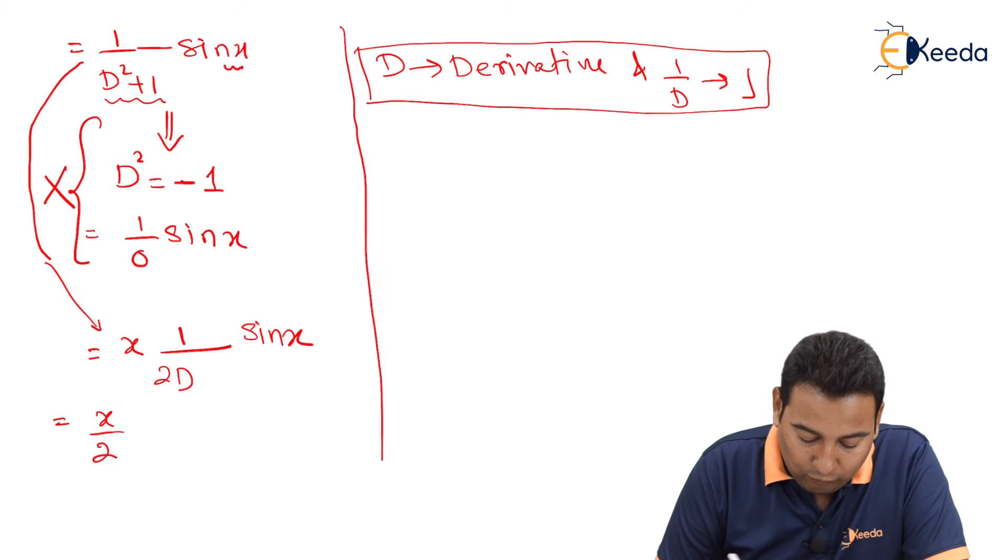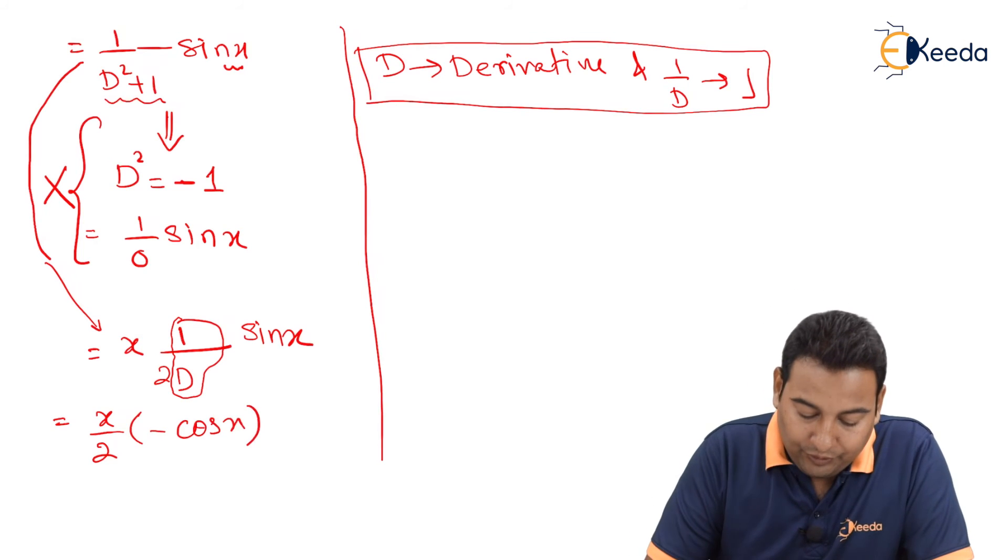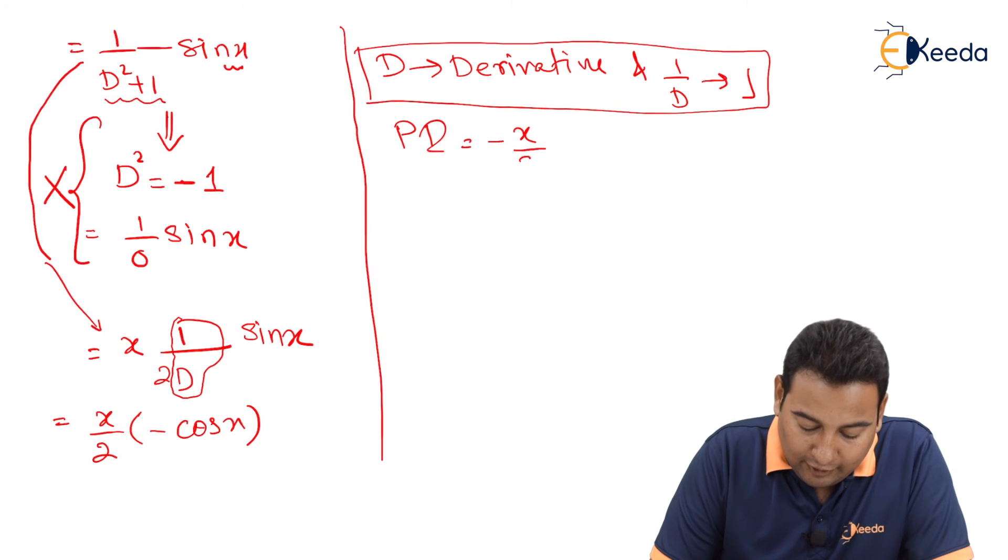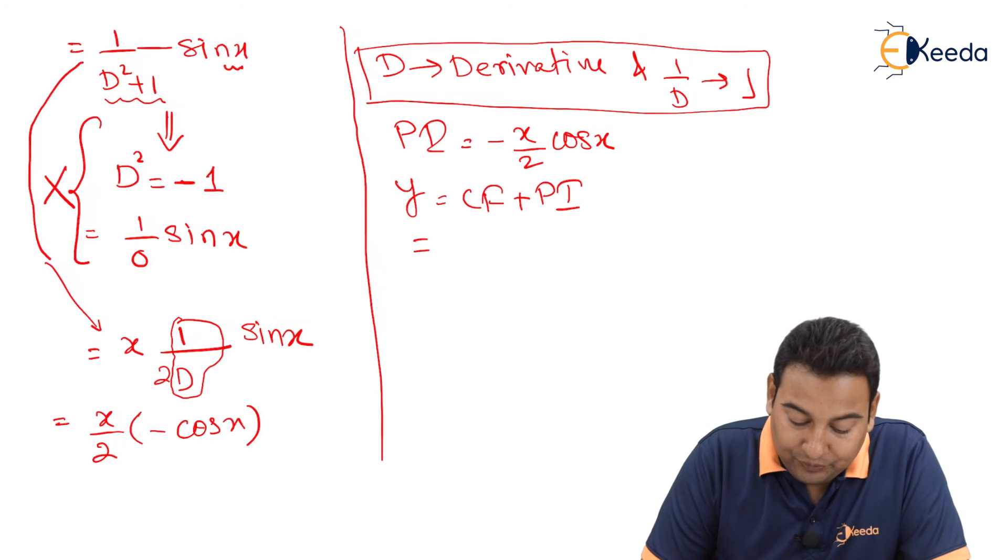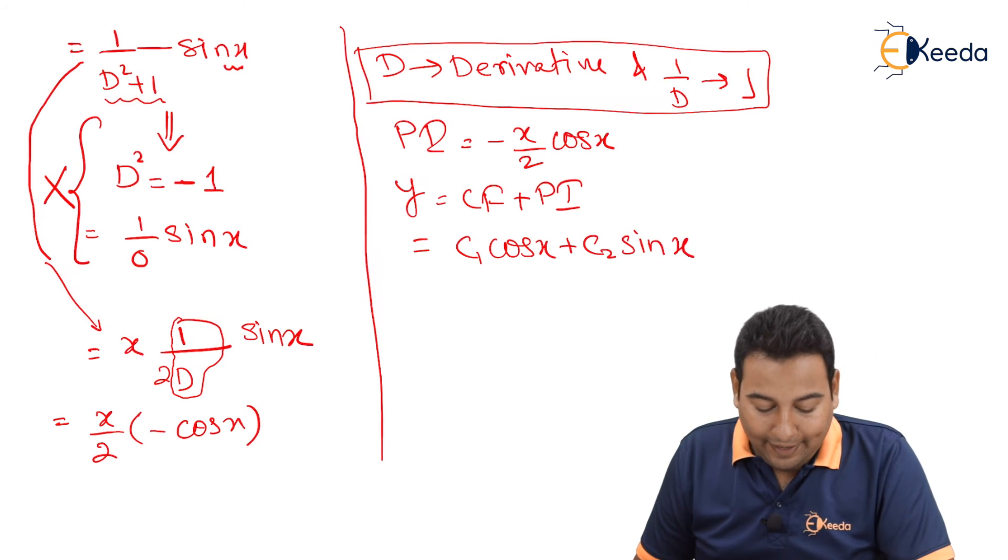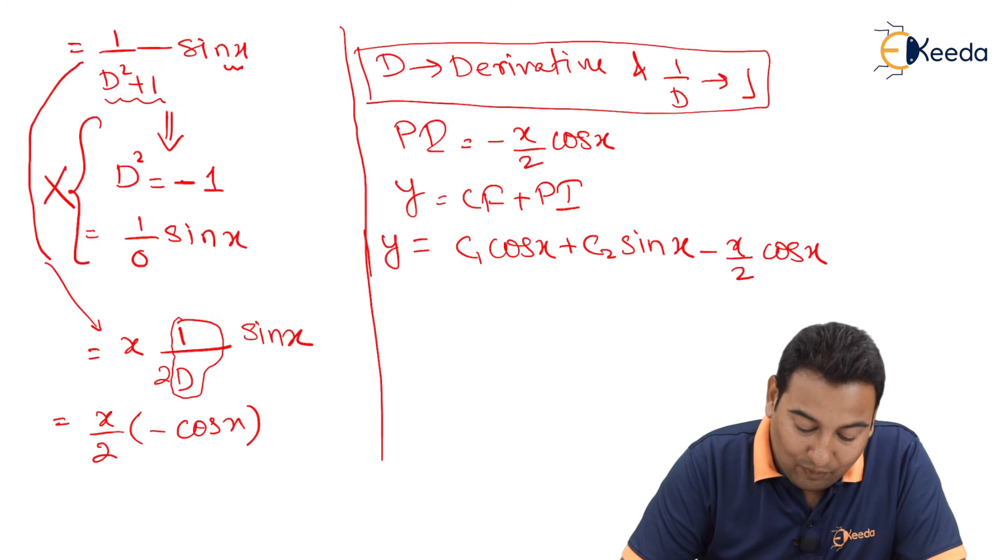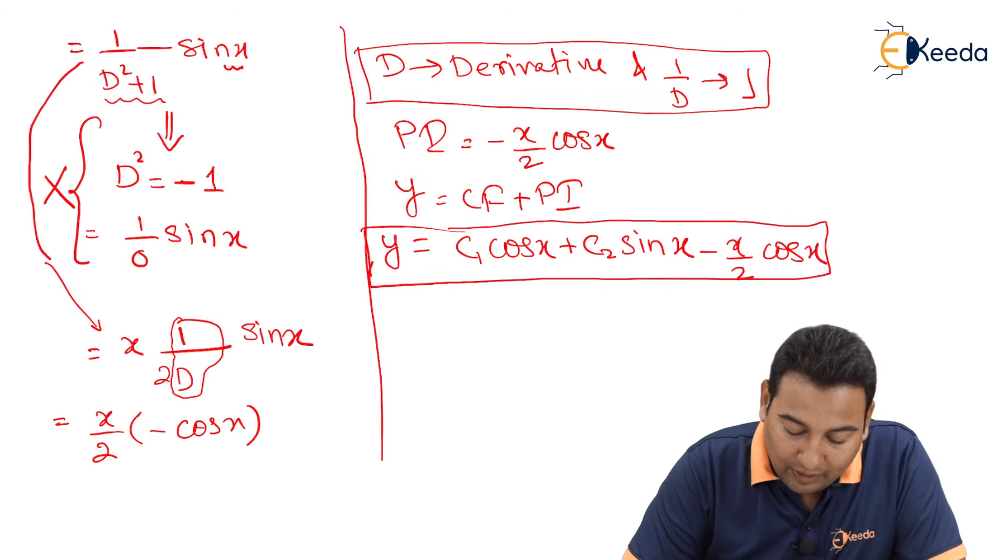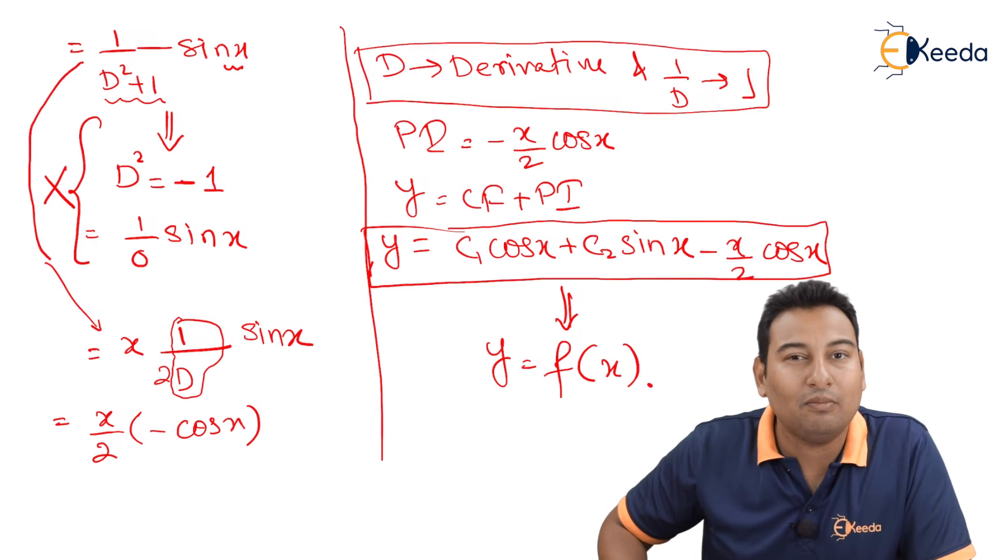This is x/2. This 1/D is actually integration. Integration of sin x is minus cos x. We got the PI minus x/2 cos x. And what is the solution friends? CF plus PI. What is the CF? C1 cos x plus C2 sin x. This is what we got it. And PI is minus x/2 into cos x. This is the required solution. y is equal to f of x. We got the solution. Hope you understood. We are done with the problem. Thank you.